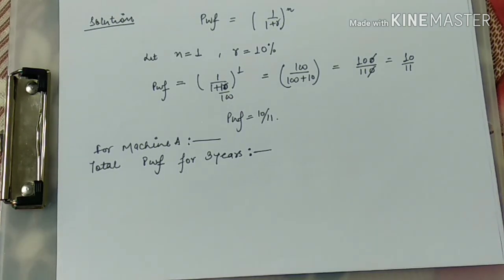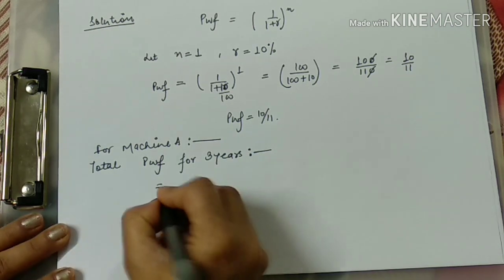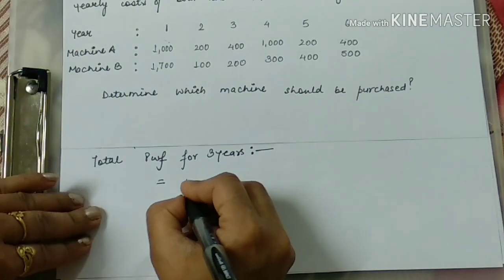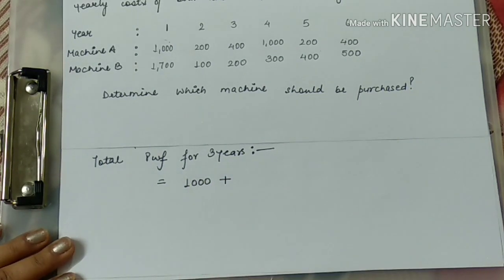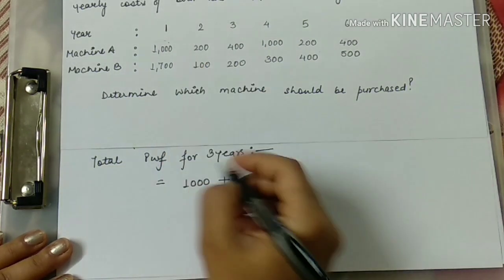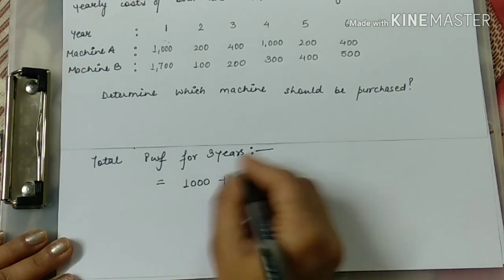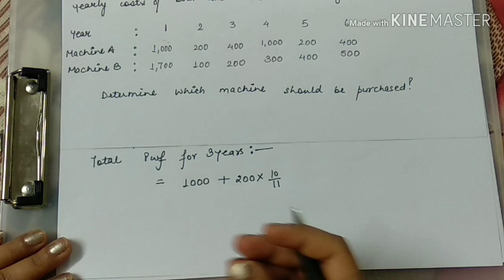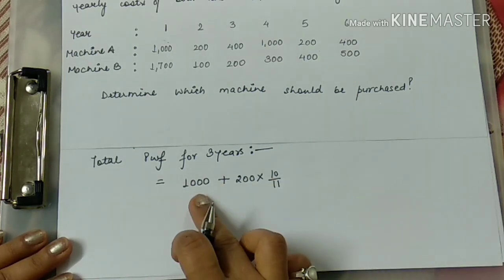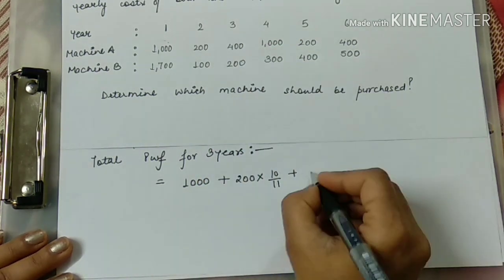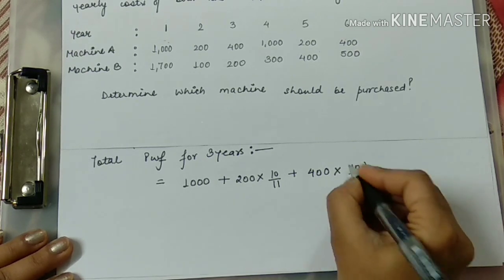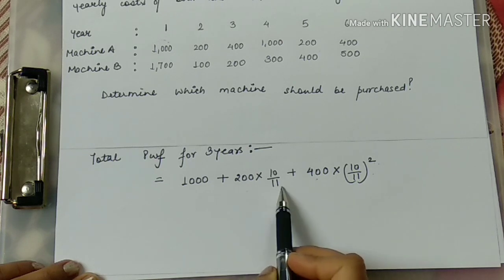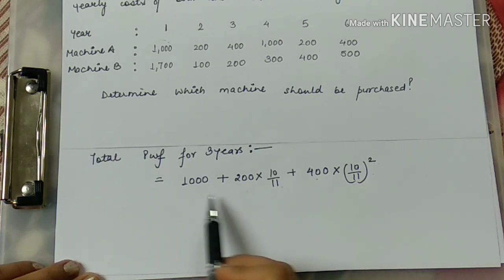We are calculating how much total money is required for machine A in 3 years. The cost in year 1 is 1000 rupees. For year 2 it is 200 rupees, but since one year has passed, we multiply by 10/11 (the present worth factor) with n=1. For year 3 it is 400 rupees multiplied by (10/11) squared, because n becomes 2 for the 3rd year.